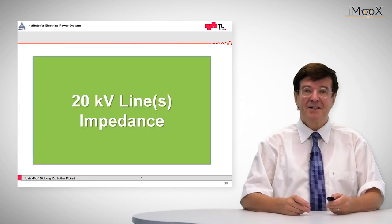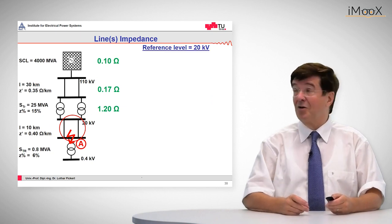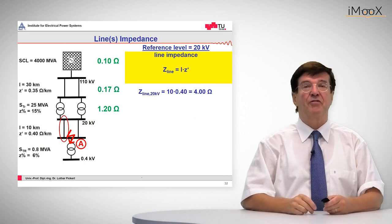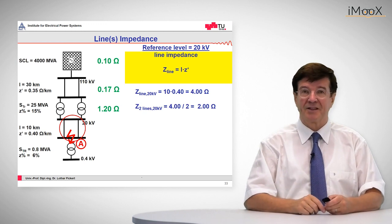The line impedance is calculated as before by applying the law of specific impedance times the length, and we obtain four ohms for one line. We have two in parallel, so the lines all together are two ohms.